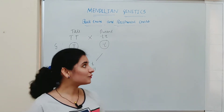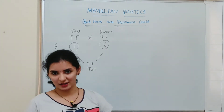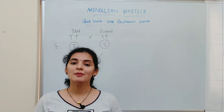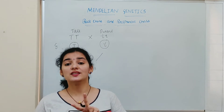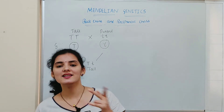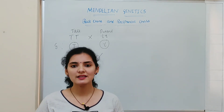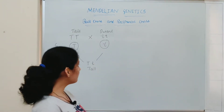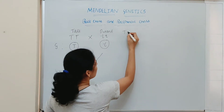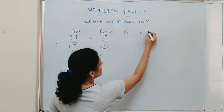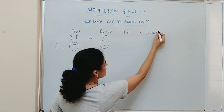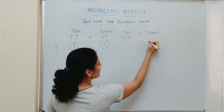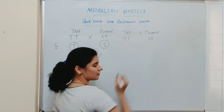One more similar kind of cross is reciprocal cross. It is a type of cross involving the same trait or character but with reversed sex. Considering the same example of tall plant (TT) crossed with dwarf plant (tt), in the first set of experiments the tall plant is treated as the male parent and the dwarf plant as the female parent.